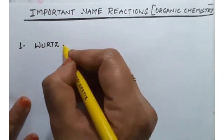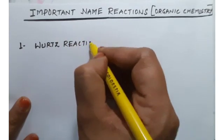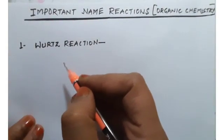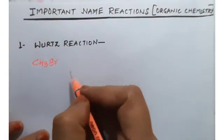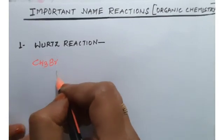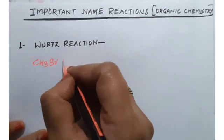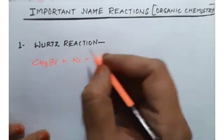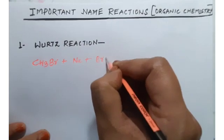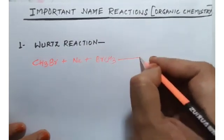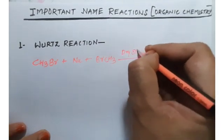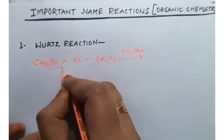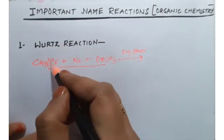Wurtz reaction is used for the preparation of higher alkanes. When an alkyl halide like methyl bromide or ethyl chloride reacts with metallic sodium — two molecules — in the presence of dry ether, an alkane will form along with sodium halide as byproduct.